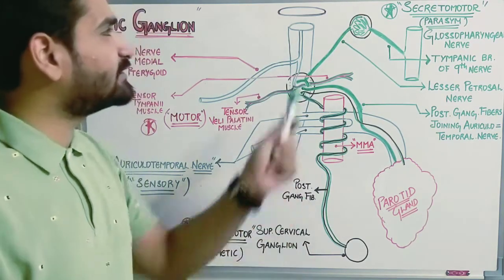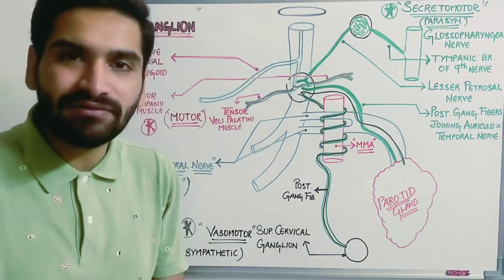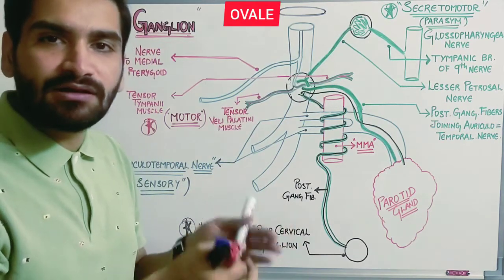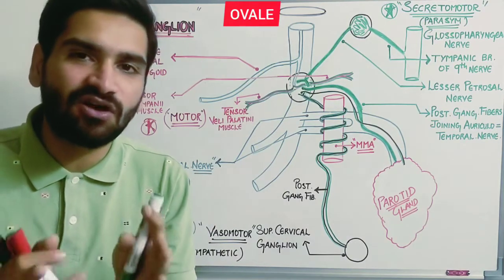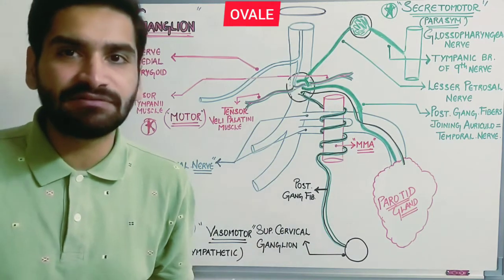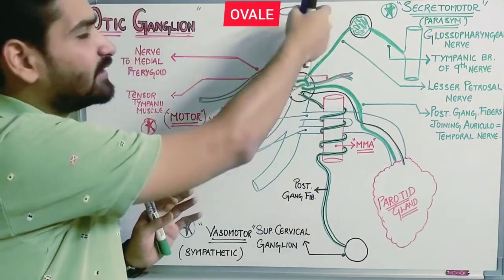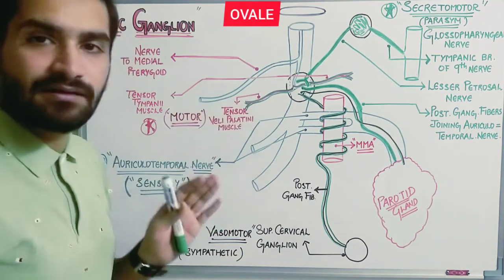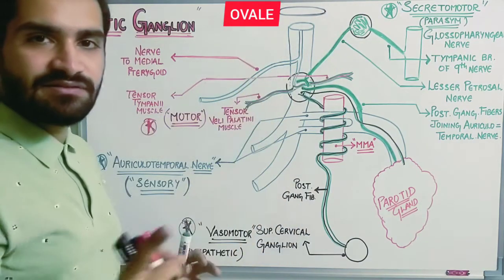The mandibular nerve, which we studied in our previous lecture, exits from the foramen ovale. From the foramen ovale, the mandibular nerve comes out and divides into three divisions: the main trunk, the anterior division, and the posterior division.